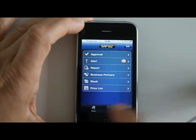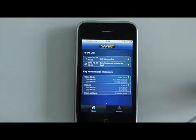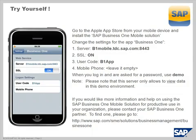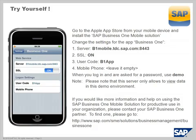So this was really a quick introduction into the SAP Business One mobile solution. Do you want to try it yourself? You can do that. Feel free to go on the Apple App Store and download the SAP Business One mobile solution. Then you need to change your settings as indicated on the screen: the server location, SSL needs to be on, and the user code is B1 app. For your mobile number you can leave that empty. We have set up a special dummy company in the background that you will actually be connecting to and getting data out of, so you can play around there as well.